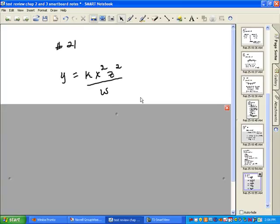This is number 21 on your review sheet. The problem actually tells you that y varies jointly with the square of x and the square of z and inversely with w. Jointly means the same thing as direct variation. Direct variation means that all your variables are on the same line. We have y, we always have k, and we have x and we have z. They're all on the same level.